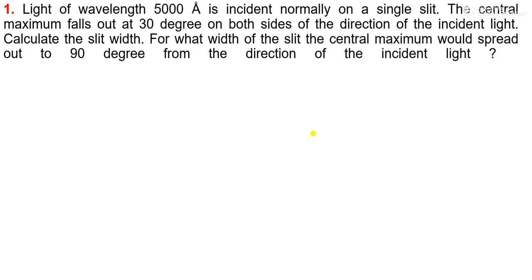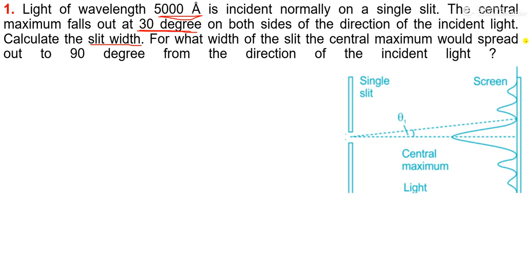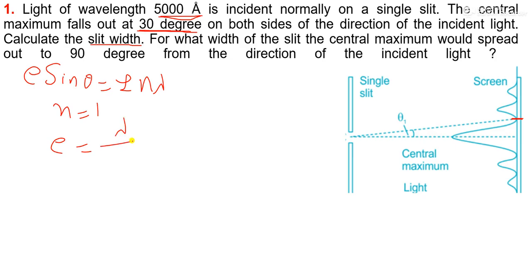The first numerical: light of wavelength 5000 angstrom is incident normally on a single slit. The central maximum falls out at 30 degrees on both sides of the direction of incident light. Calculate the slit width. Lambda is 5000 angstrom and the angle is 30 degrees. The central maximum falls out means theta is for the first minimum. The condition for minima is e sin theta equal to plus minus n lambda, and for first minima n equals 1, so e equals lambda upon sin theta.